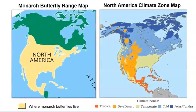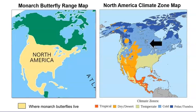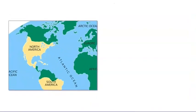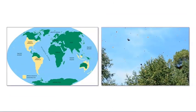I wonder why monarch butterflies live mostly in North and South America. Let's take a closer look at the yellow areas of North America and compare the monarch butterfly range map to the North America climate zone map. It looks like monarch butterflies live in all the climate zones in the United States. They can live in hot and cold locations and even really dry places like those in the dry desert climate zone. It seems as if monarch butterflies can survive in many different climates.